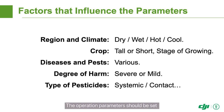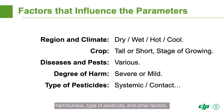The operation parameters should be set after considering the region, crop, type of disease or pest, harmfulness, type of pesticide, and other factors. No one set of parameters is suitable for all operations.